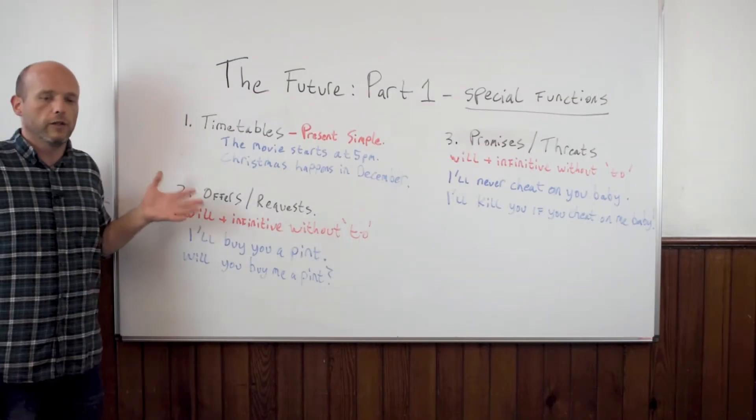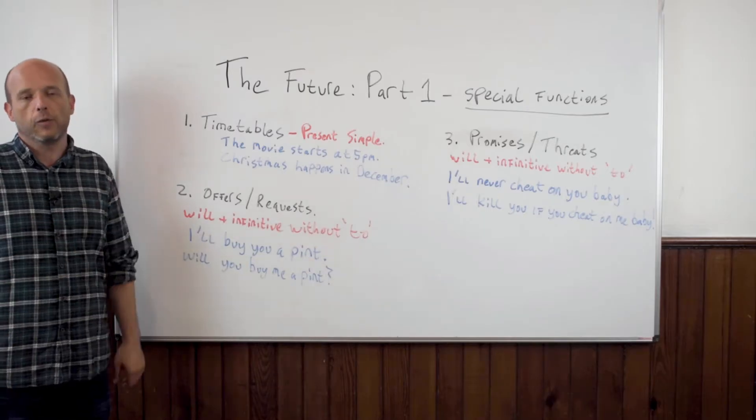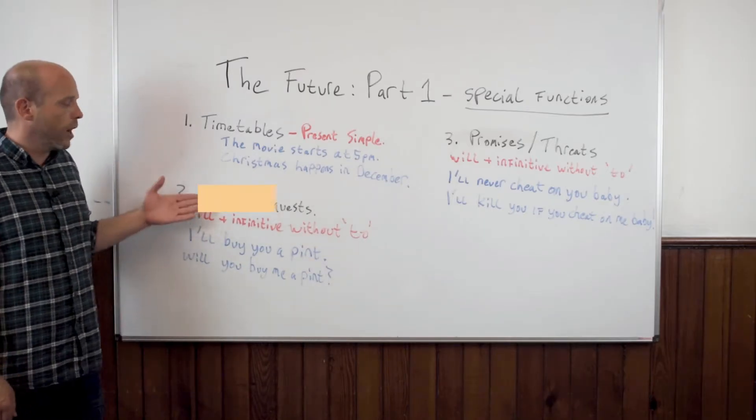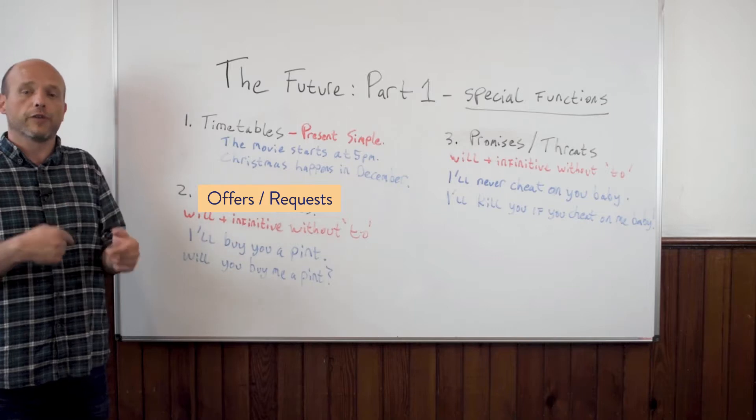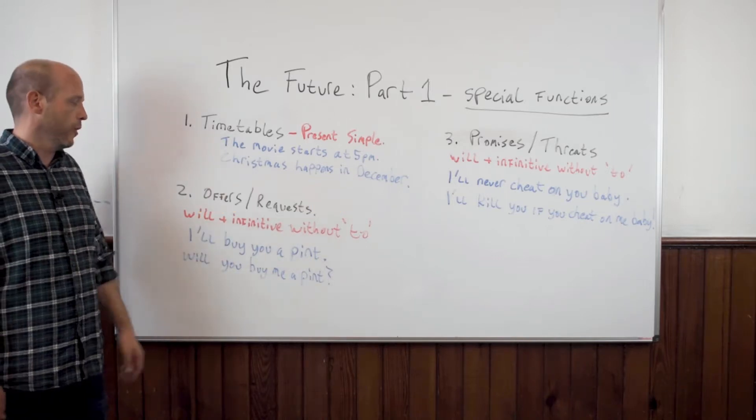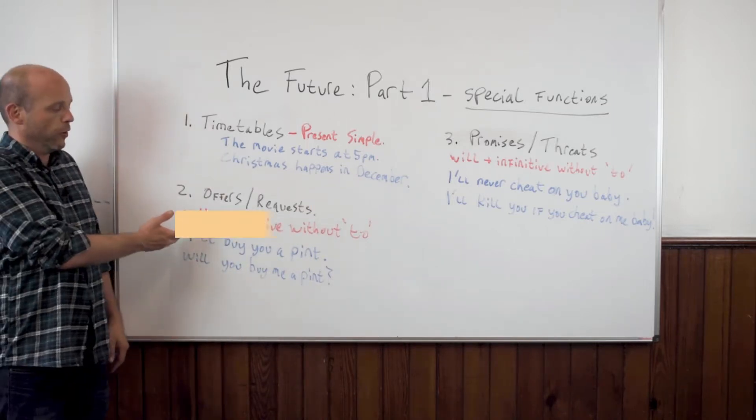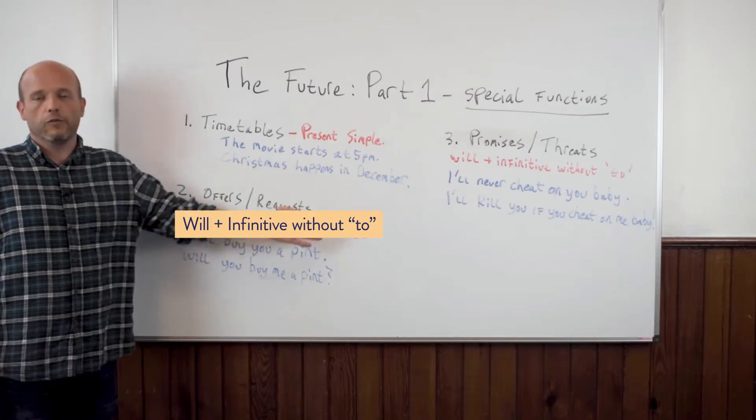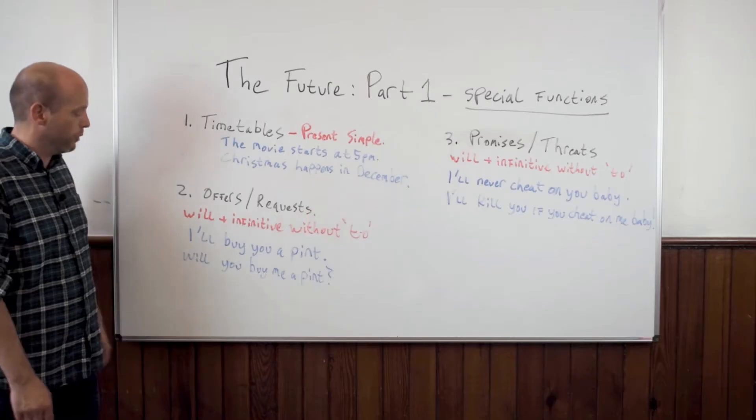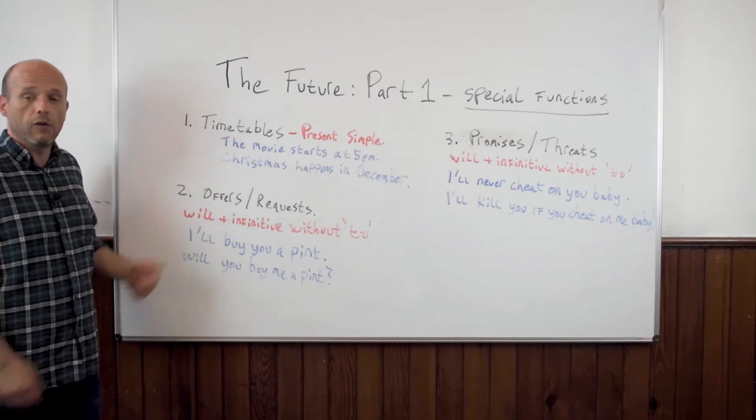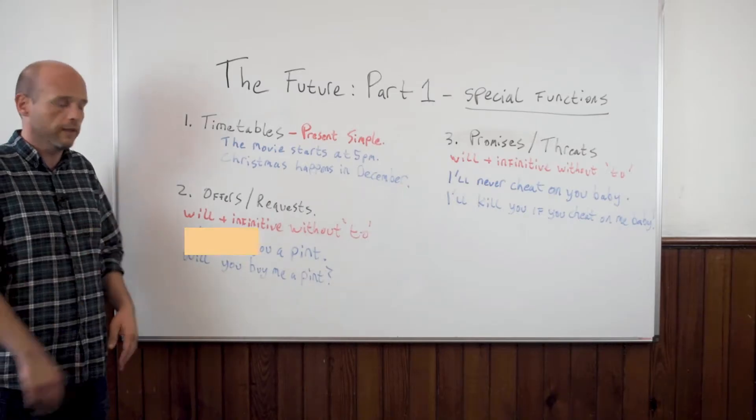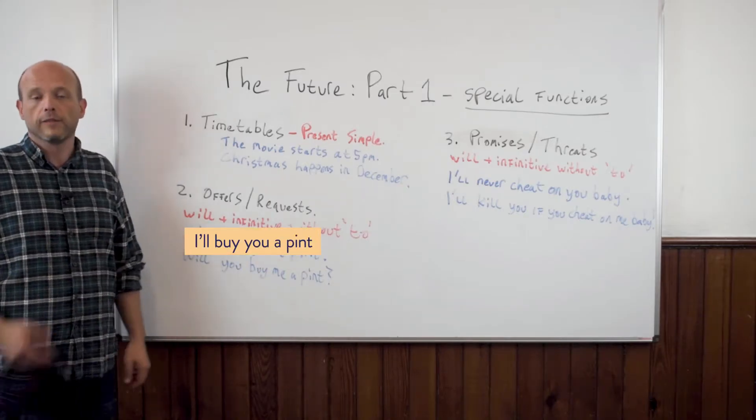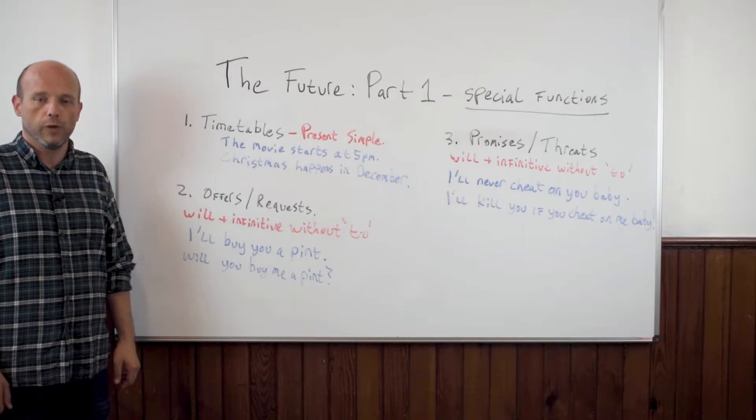The second special functional area where we talk about the future is about offers, and the inverse of an offer, requests. For this, we use will plus the infinitive without to. An example of that might be I'll, or I will, contracted, I'll buy you a pint. That's an offer. So I use will.